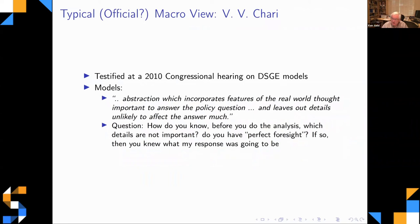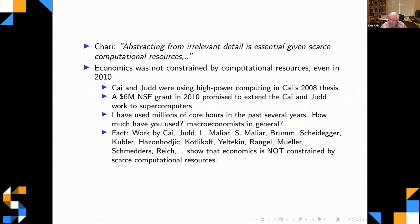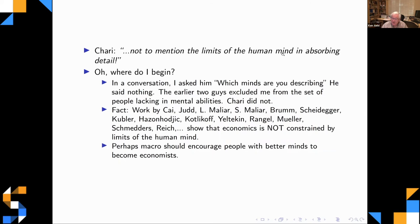Models have to abstract from things we don't think will be important because computational resources are scarce and the human mind is limited in absorbing detail. I once had lunch with Chari and asked him: 'Which minds were you describing?' The look on his face said it all — he realized that probably wasn't the smartest thing to say. But here again are just examples of people who have been doing sophisticated things using high-power computing.